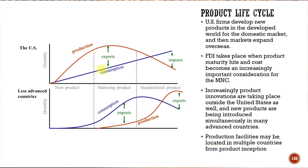At some point it becomes more affordable to actually move production overseas. That's why U.S. firms develop new products in the developing world for that domestic market — it might not have all the bells and whistles, but it works perfectly for the target customer. This means foreign direct investment takes place: companies take cash and know-how to a new country, build a factory, and hire local people.